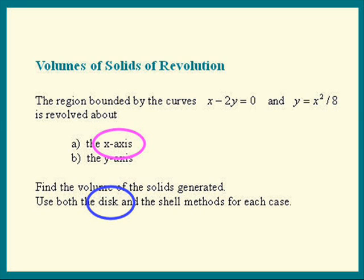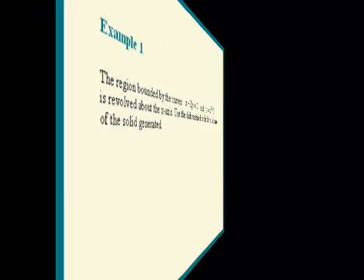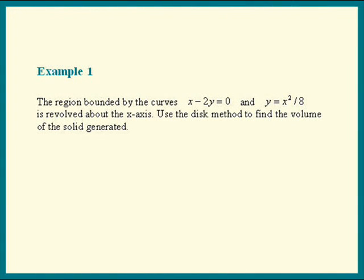So if you want to skip around to the different cases, you may. Here is example one stated in its entirety. The region bounded by the curves x minus 2y equals zero and y equals x squared over 8 is revolved about the x-axis. Use the disk method to find the volume of the solid generated.